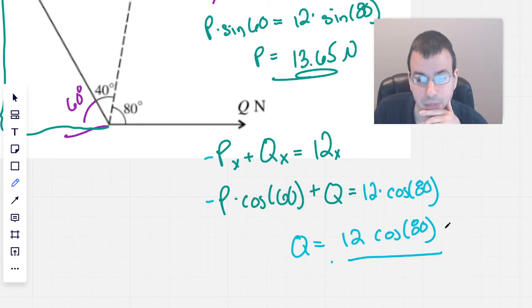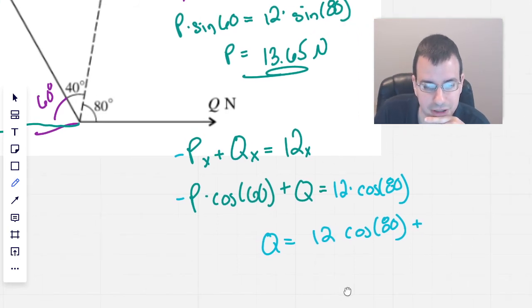Hmm, nope, not over. We're going to do minus, plus, plus P cosine of 60. There we go. Working on the algebra there.